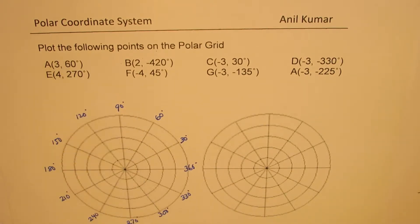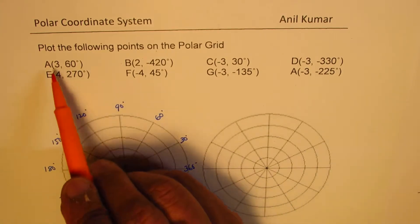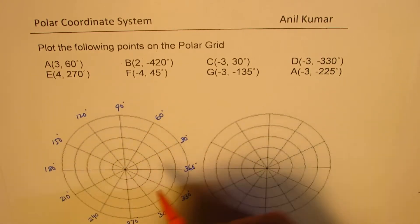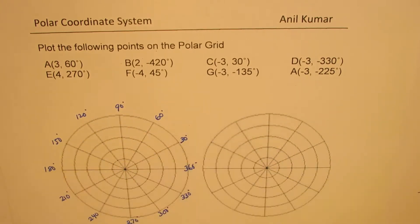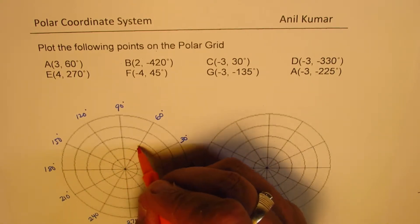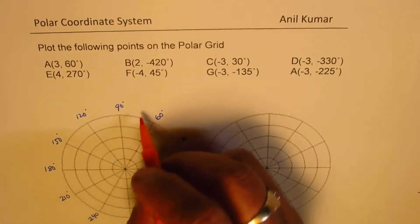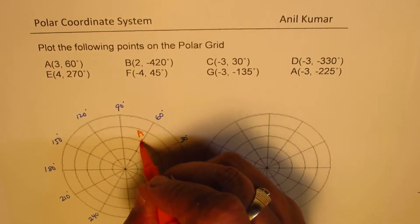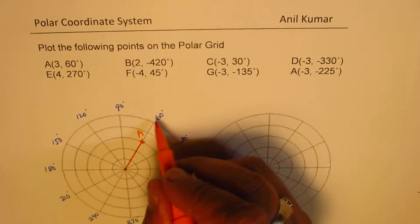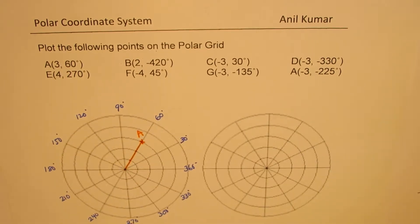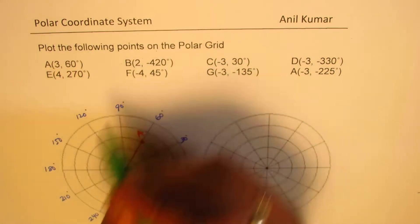Point A is (3, 60°), which means r is 3 and the angle is 60 degrees. So the angle of 60 degrees is right there, and each ring is one unit long — so 1, 2, 3 — that point here represents A. I'm joining it with the pole; the length is three units and the angle is 60 degrees, as you can see. So we get point A as shown here on the diagram.